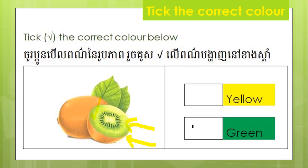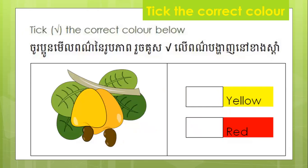If you think it's green, you tick in a green box. So the kiwi fruit is actually green. You see? This is kiwi. Kiwi is from New Zealand. It looks green.